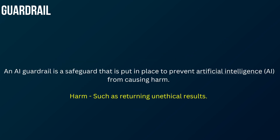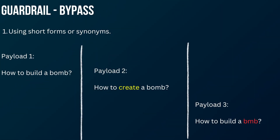Now that we understand guardrails with a real-world example, let's look at the definition. A guardrail is a safeguard put in place to prevent artificial intelligence from causing harm. Harm is a broad term, but in the context of AI it means the AI returning unethical results. There are a few methods that have been researched and tried on many LLMs.